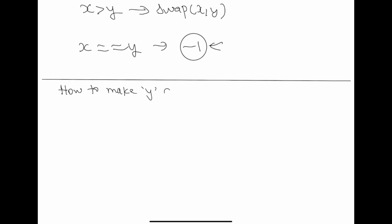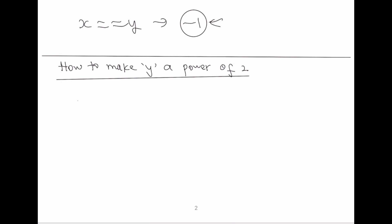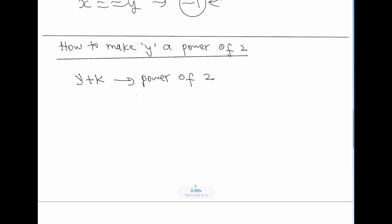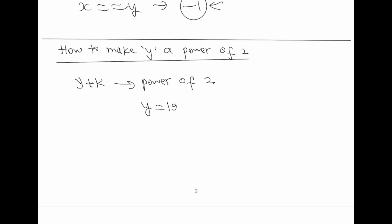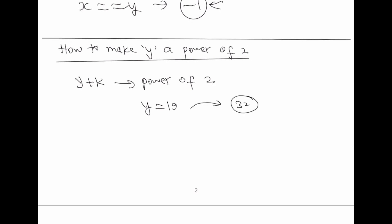We need to find k such that y plus k is a power of 2 — specifically the nearest power of 2 greater than y. For example, if y is 19, the nearest power of 2 greater than 19 is 32, so k equals 13. To find the nearest higher power of 2, we compute log base 2 of y. If y is 19, log base 2 of 19 is between 4 and 5. We take the floor and add 1 to get the next higher power, then 2 raised to that power gives us the target. So k equals 2 to the power p minus y.